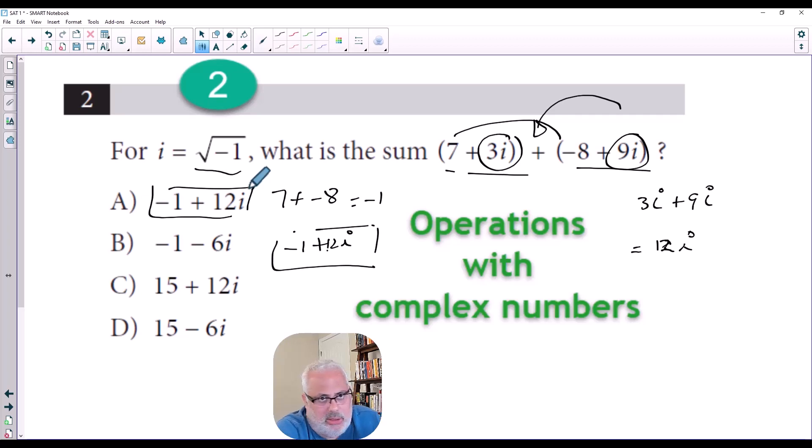And 3i plus 9i, that can be 3x plus 9x equals 12x. But in this case, the x is i. So 3 plus 9, sorry, is 12x. 3i plus 9i is 12i. Combine the two. So negative 1 plus 12i. And you have the first answer there. The first answer is A.